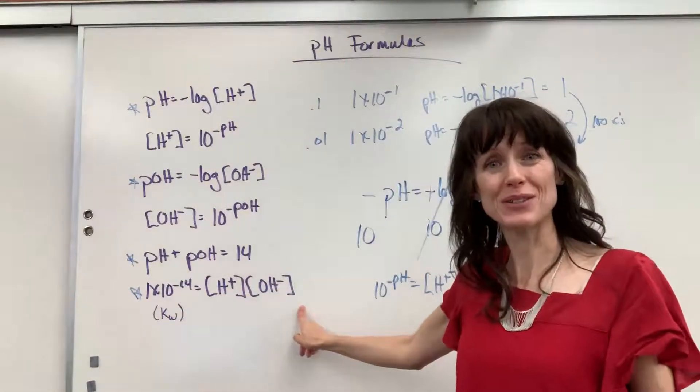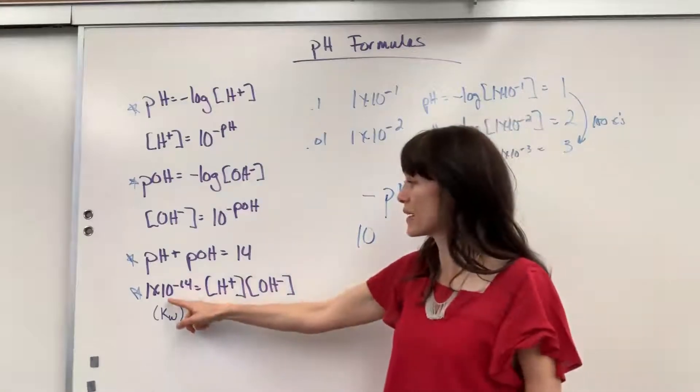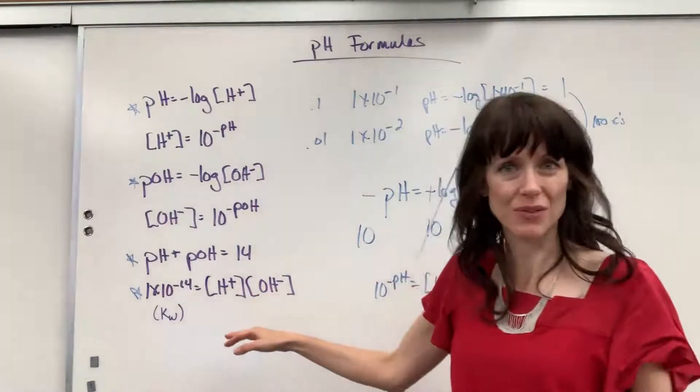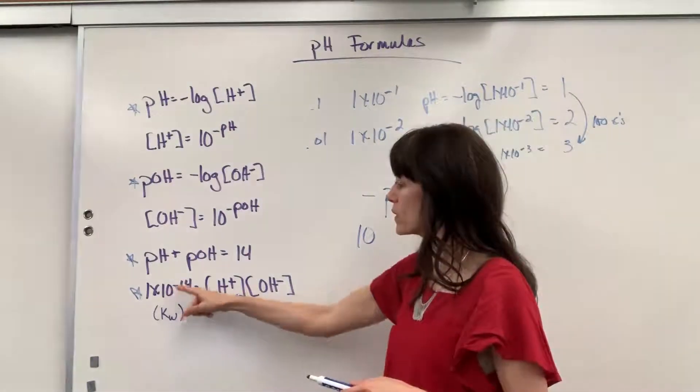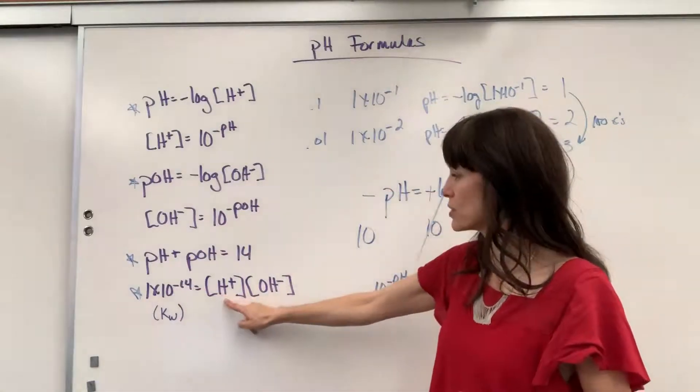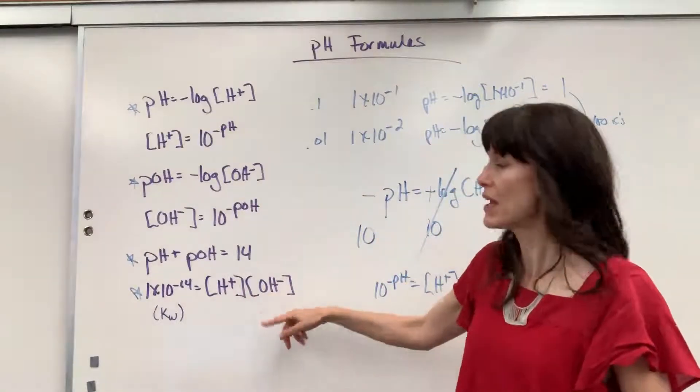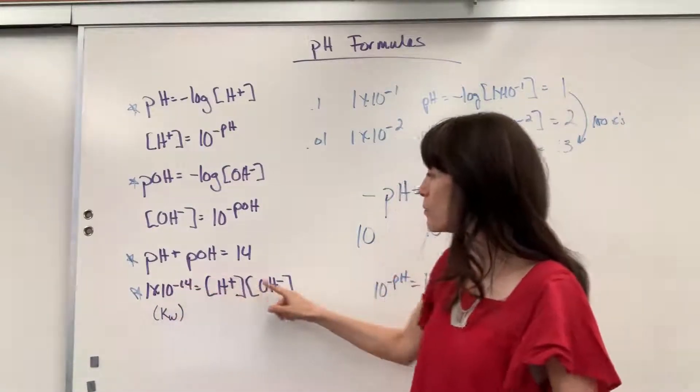I wanted to remind you of that. 1 times 10 to the minus 14. You can watch a whole video just on where that comes from, the beauty of water's auto-ionization. So, 1 times 10 to the minus 14 equals hydrogen ion times hydroxide ion.